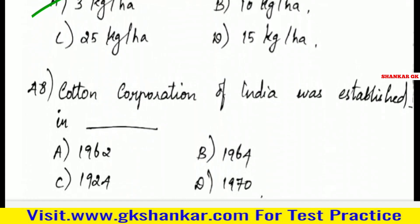Forty-eighth question: Cotton Corporation of India was established in — A. 1962, B. 1964, C. 1924, D. 1970. Answer: D. 1970.